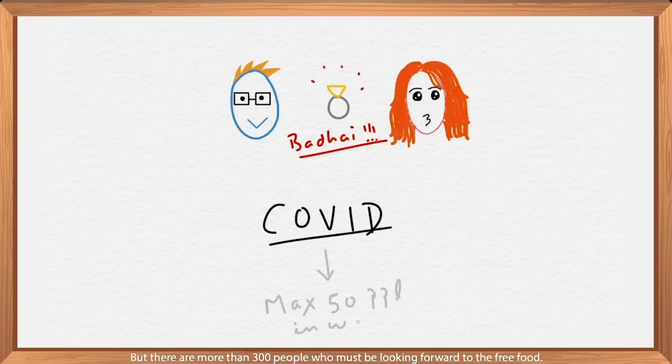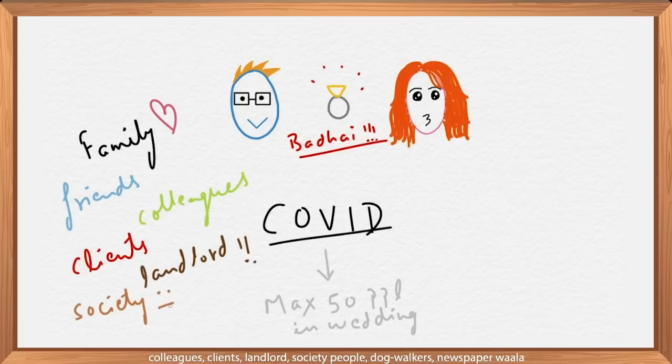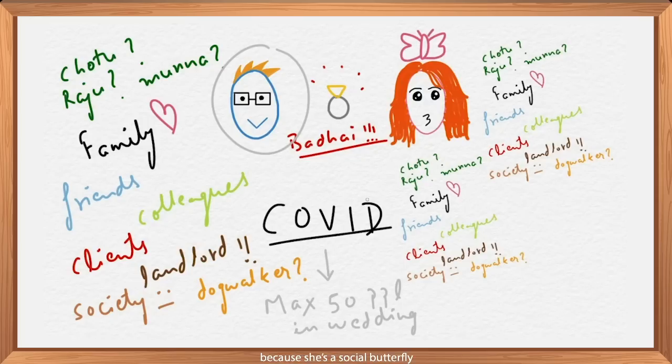But there are more than 300 people who must be looking forward to the free food. We have immediate family members, long lost relatives, friends, colleagues, clients, landlords, society people, dog walkers, newspaper wallah, the list is endless. And that's just Golu's list, twice that for Gudiya, because she's a social butterfly. So this poor couple now has to choose who all to invite. They have to make sure they don't cross the 50 people limit, while at the same time representing all or most of these groups.